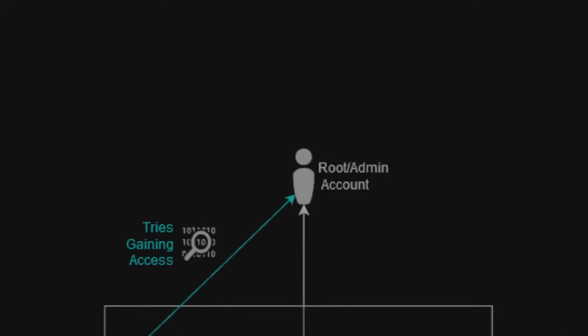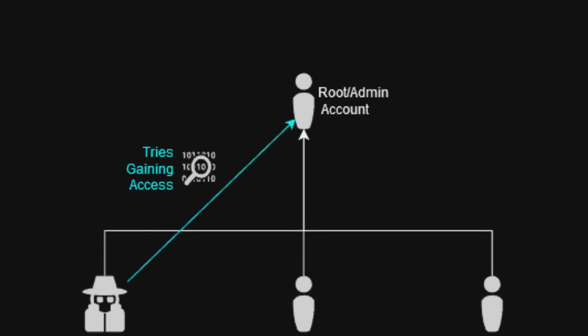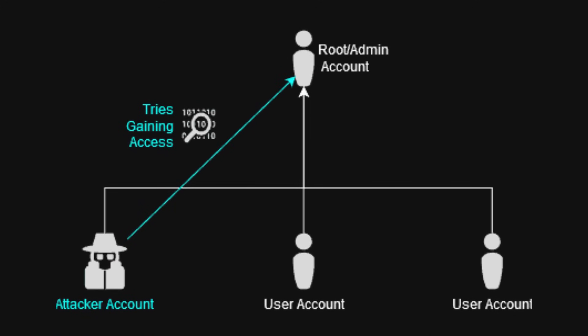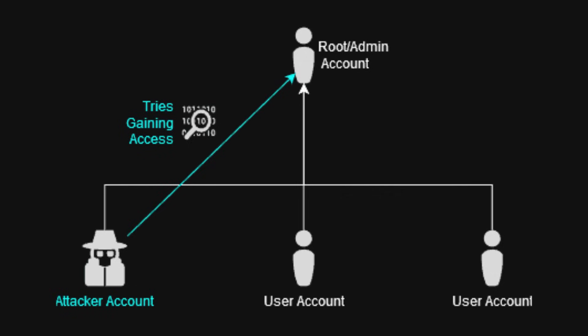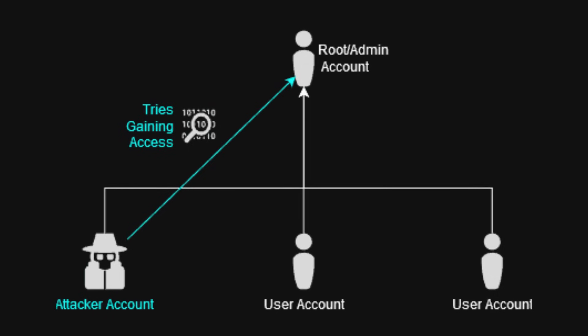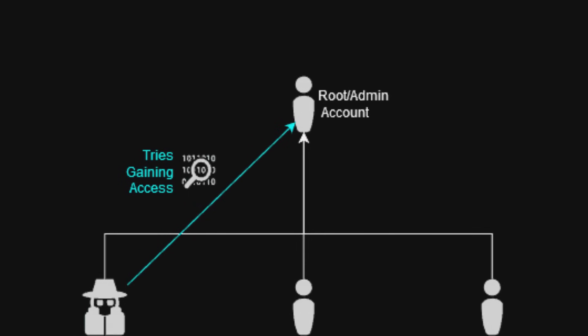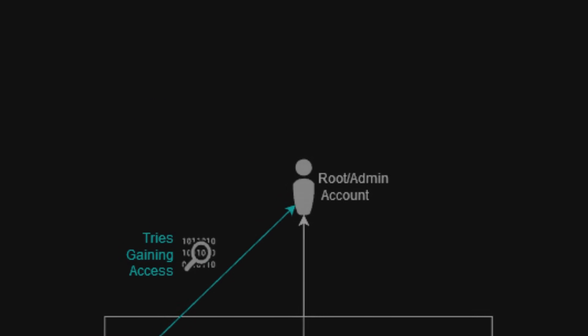Privilege escalation. Privilege escalation is when hackers gain higher access levels than they're supposed to have. This can allow them to control more of the system. It's like finding a janitor's key that opens all the doors in a building.